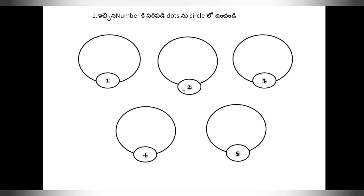Here is 2, so here we have to circle 2 circles. Again here also we have to put 3 dots. Just see the activity. First of all here is 1, so we have to write 1 dot here.